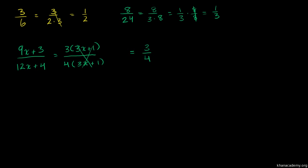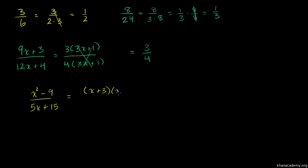Let's do another one. Let's say we had x squared minus 9 over 5x plus 15. The numerator is a difference of squares, so we can factor it as (x + 3)(x − 3). And in the denominator, we can factor out a 5, giving us 5 times (x + 3). So once again we have a common factor in the numerator and denominator, and we can cancel them out.